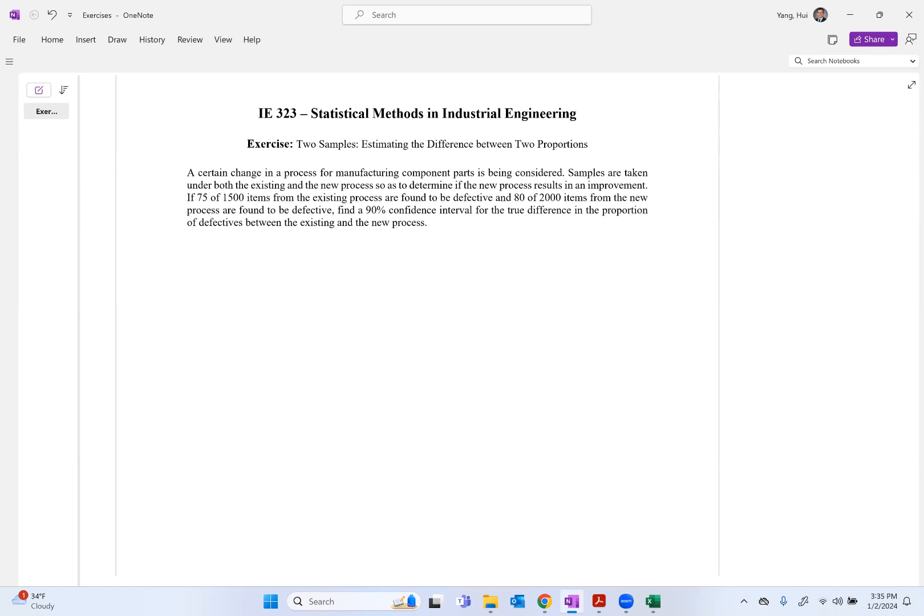75 out of 1500 items from the existing process are found to be defective, and 80 out of 2000 from the new process are found to be defective. So find the 90% confidence interval for the true difference in the proportions of defectives between the existing and the new process.